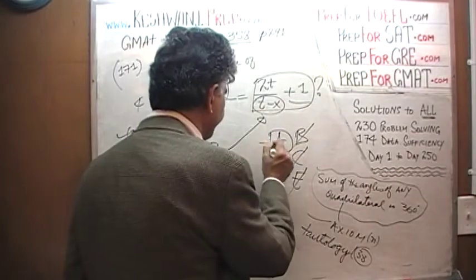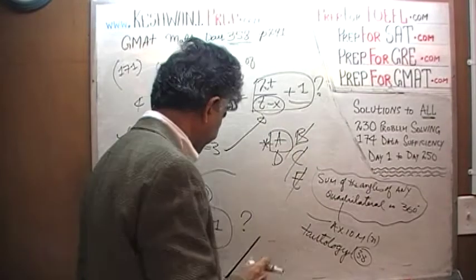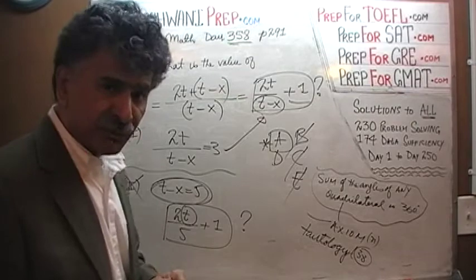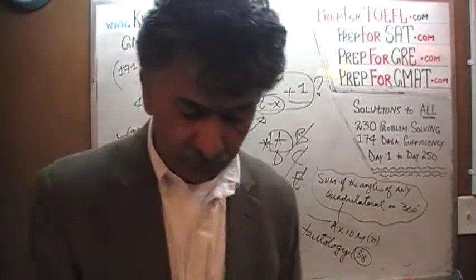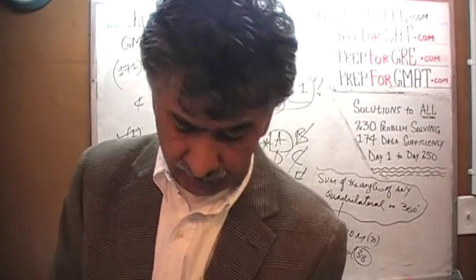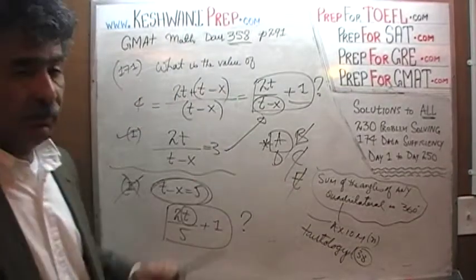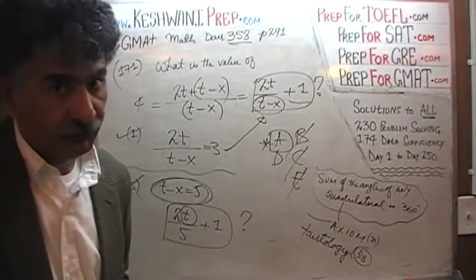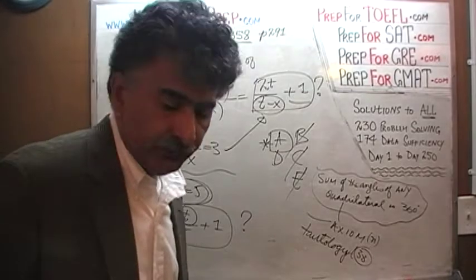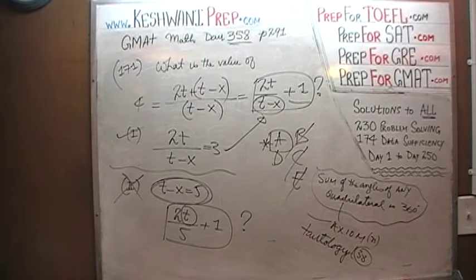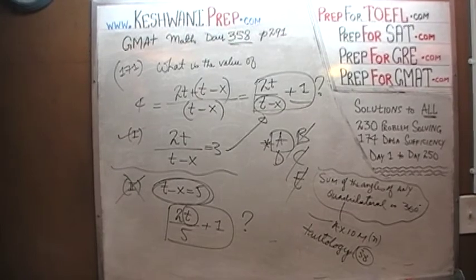Therefore the answer to problem 171 is A. We are in the final stretch — we have three more problems to go in the data sufficiency, which we will do in the next video. That will be the last video of the data sufficiency, day number 360. I'll see you next time. Bye!